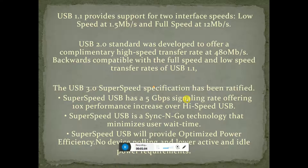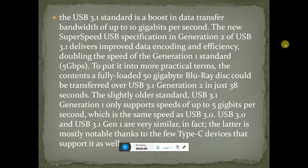The USB 3.1 standard boosts data transfer bandwidth up to 10 Gbps. The new Super Speed USB Generation 2 specification delivers improved data encoding efficiency, doubling the speed of the first generation standard of 5 Gbps. A full 50 GB Blu-ray disc can be transferred over USB 3.1 Generation 2 in just 38 seconds.